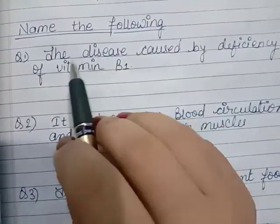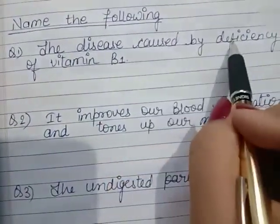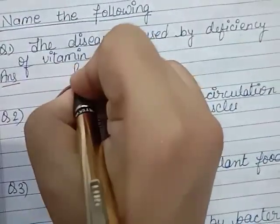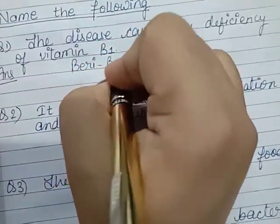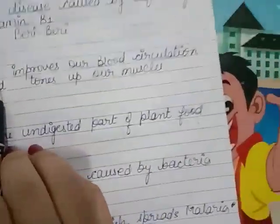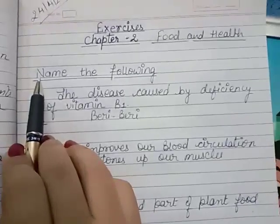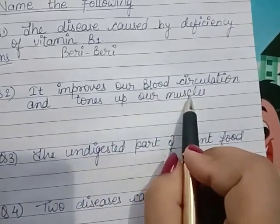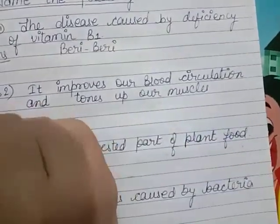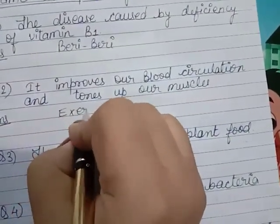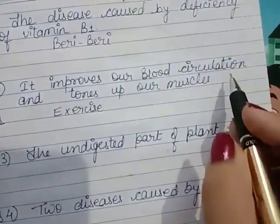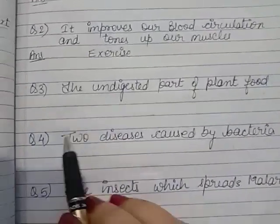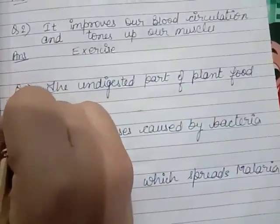The first question: name the disease caused by the deficiency of Vitamin B1. The answer is beriberi. The next question: it improves blood circulation and tones up our muscles — the answer is exercise. Exercise improves blood circulation and our muscles get toned, strong, and built up. The next question: name the undigested part of plant food — the answer is roughage/dietary fiber.